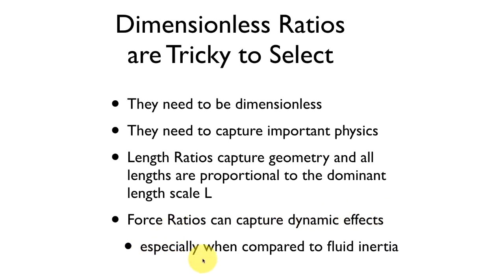Those force ratios are going to be especially interesting when we compare them to fluid inertia. Because if the fluid's in motion, we're always going to have fluid inertia. And we'd like to know how large an effect different types of forces are going to have on that inertia. We can measure that effect by taking, for instance, the ratio of the inertial forces to the viscous forces, or the inertial forces to gravity forces, or the inertial forces to pressure forces.